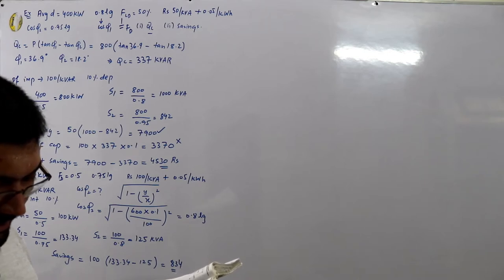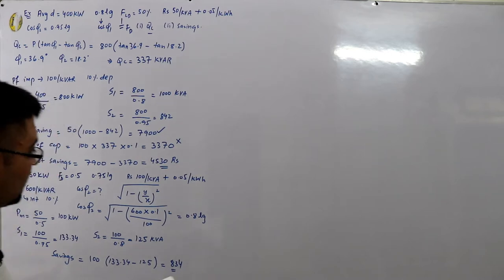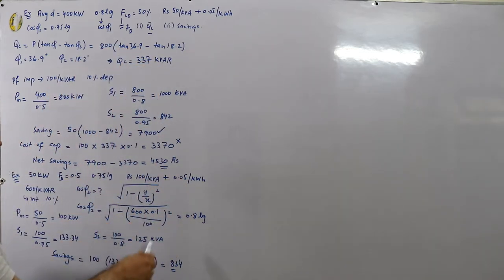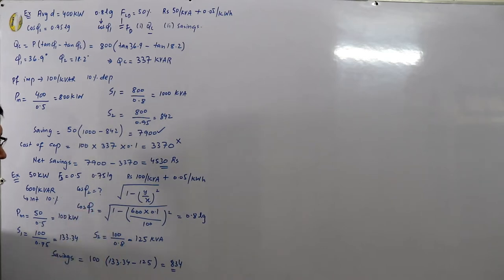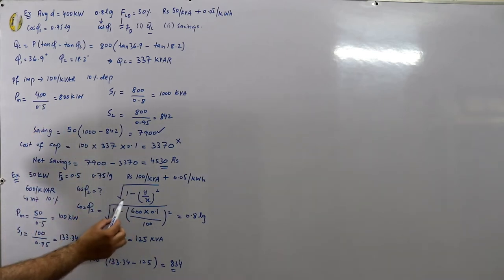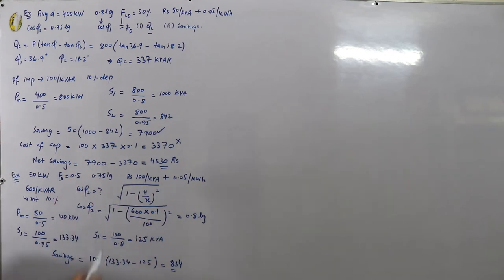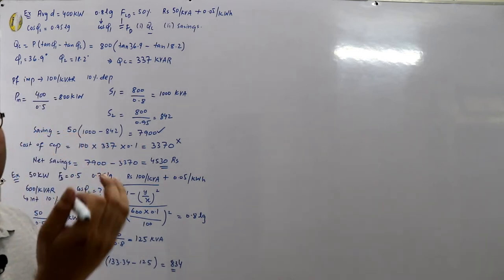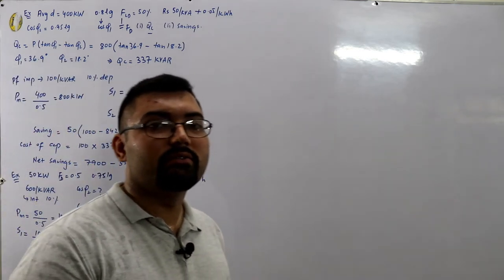The question also asks to determine the annual saving effected by improving the power factor to this value. When we talk about the most economical power factor, we do not separately calculate the cost of the capacitors, because those costs — the interest and depreciation factor of the phase advancing equipment — are already included in the most economical power factor calculation.